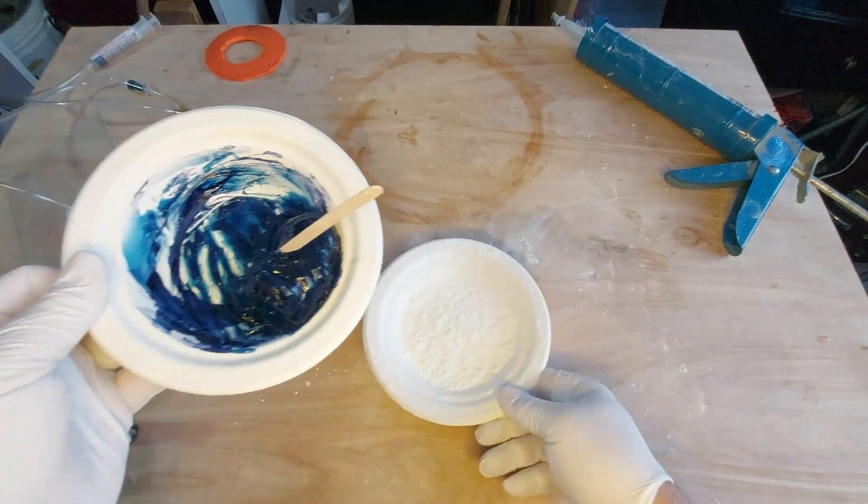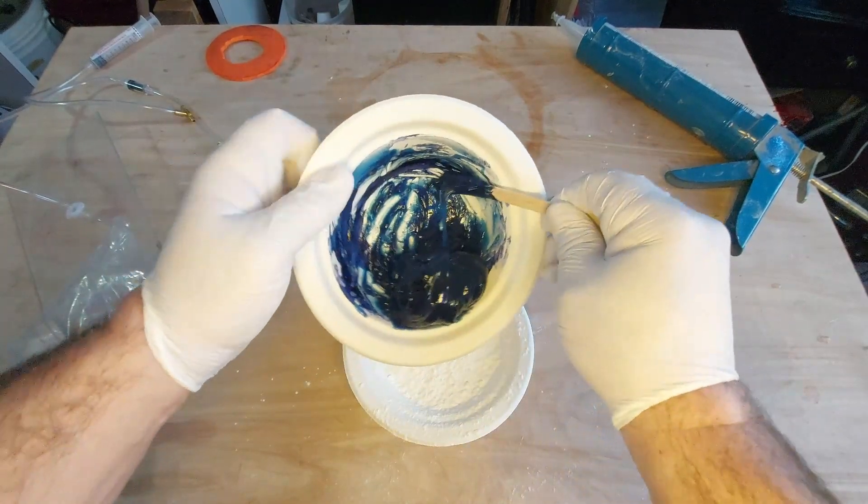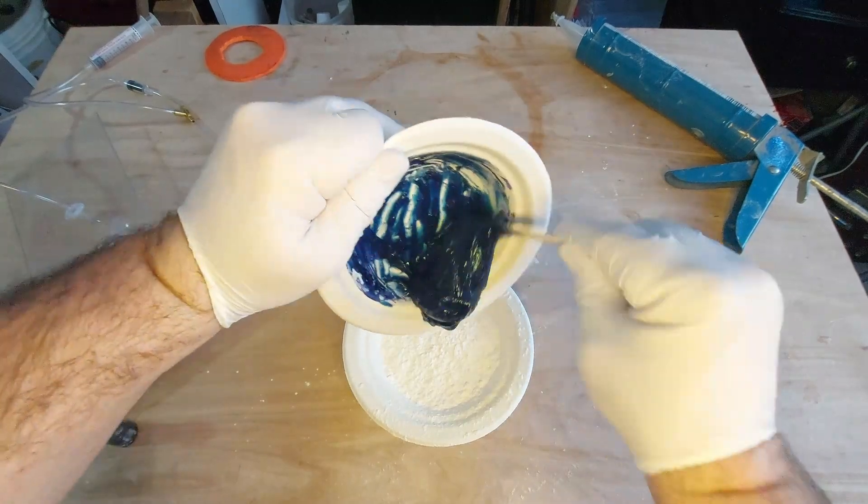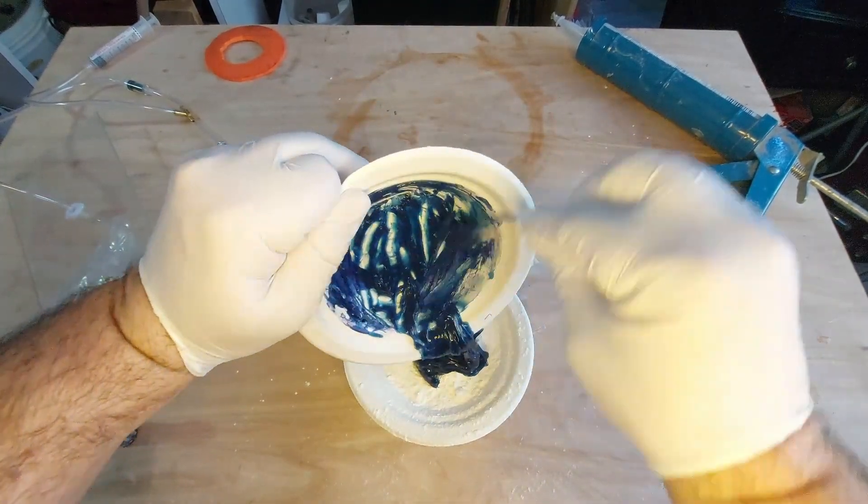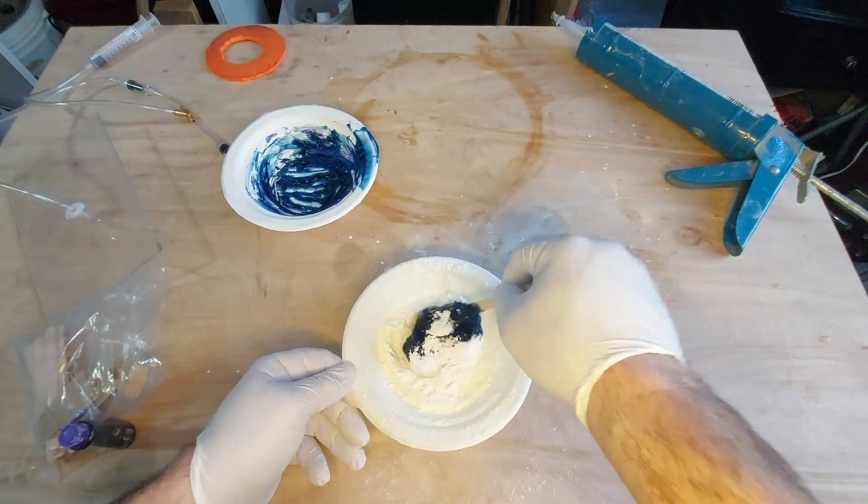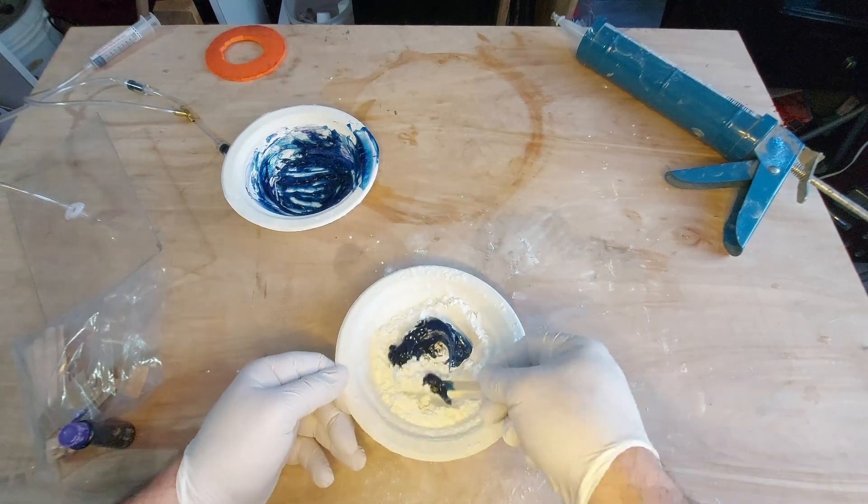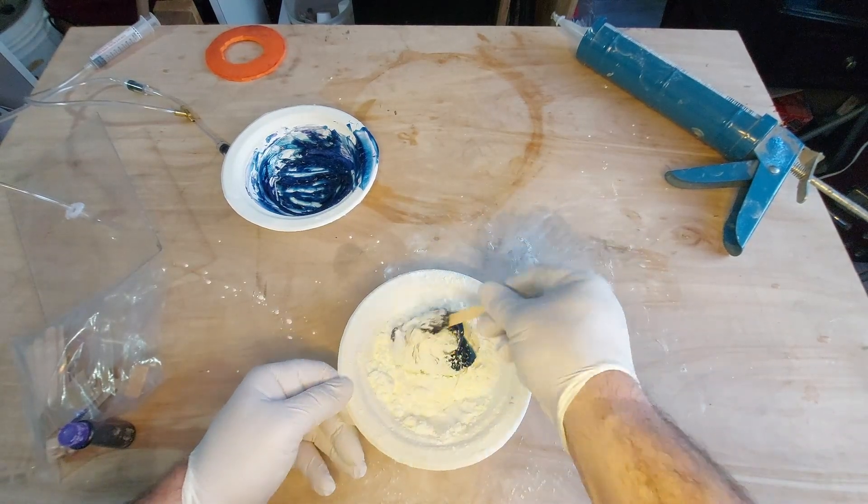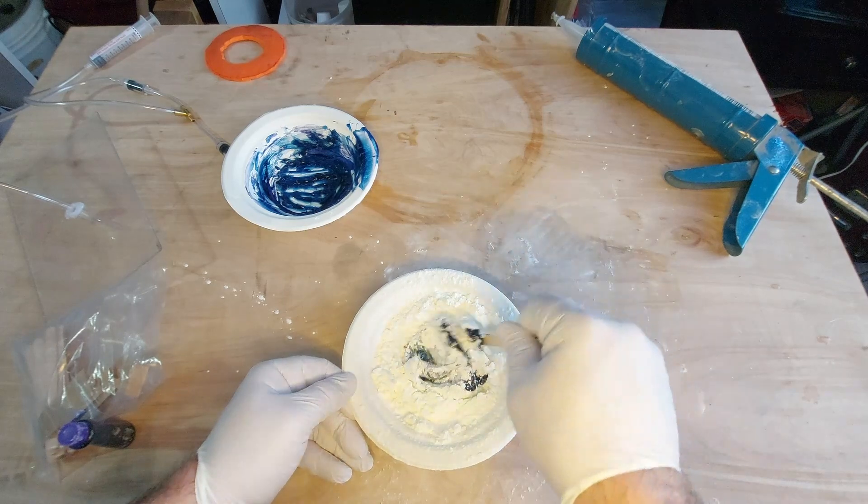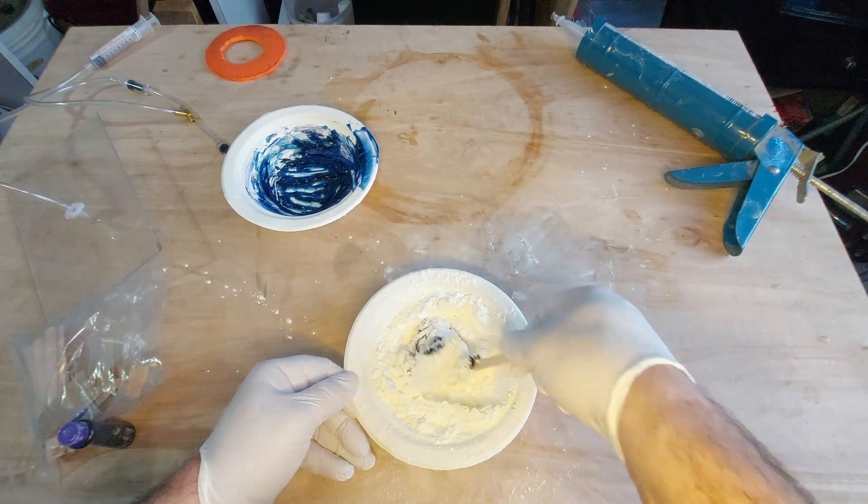Then once we've got that all mixed, we're going to drop it into our cornstarch. We're just going to roll it around and get it all covered in the cornstarch. We're just going to keep kneading that in.